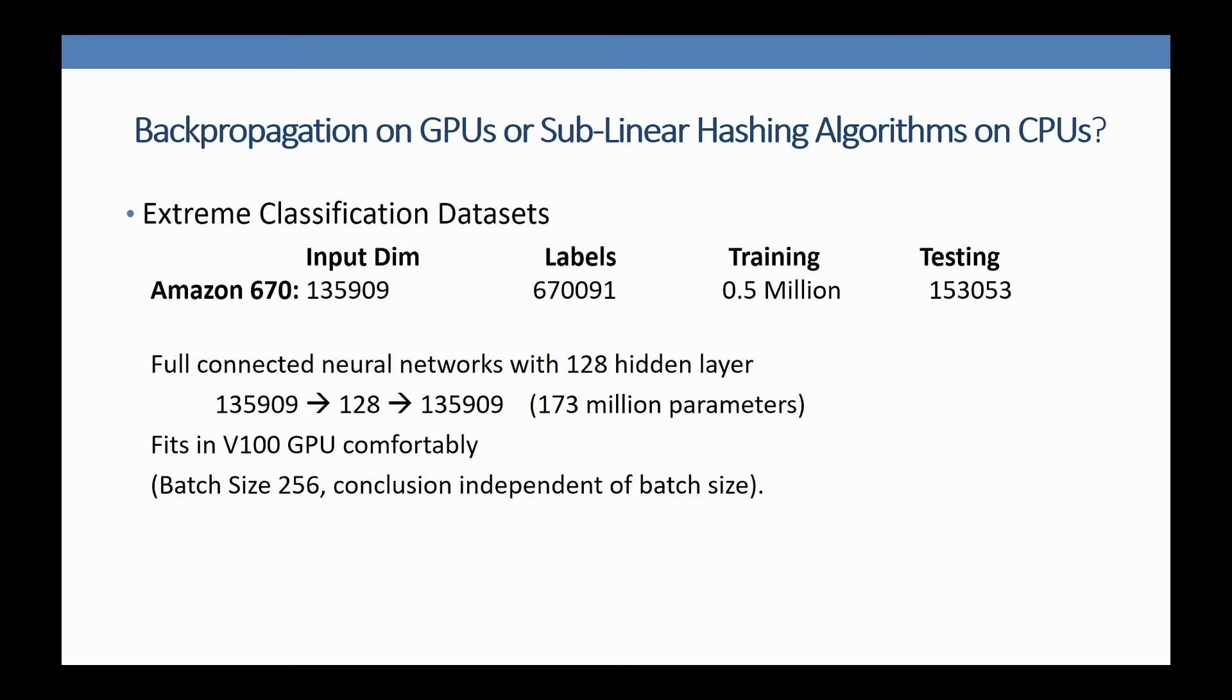Here are the competitors: TensorFlow on this CPU I had, which has 48 cores—Intel 8175 CPU—then TensorFlow on Tesla V100, the 32 gigabyte GPU, and this algorithm which I called SLIDE, Sublinear Deep Learning Engine, sublinear because it samples neurons sublinear in the number of neurons. We'll look at accuracy climb with wall clock training time. This is the Amazon product dataset: 670 possible outputs, 135,000 input dimensions, half a million training samples, 100k testing samples. The architecture is fully connected with 173 million parameters—all fits in V100 comfortably—batch size 256.